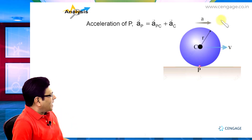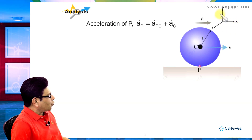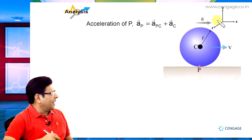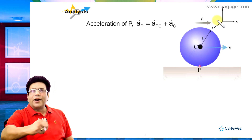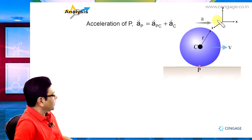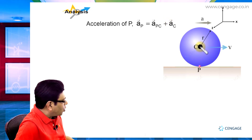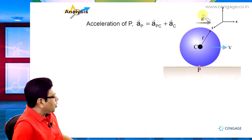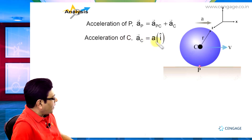Let us assign our directions: rightward direction is positive x, upward direction is positive y, and the direction perpendicular to the screen and toward you is the positive z direction. So here we can write acceleration of point C, that is the centre of the disk, a_C equals a î, because a is in the direction of positive x. In unit vector notation we write this expression as a î.